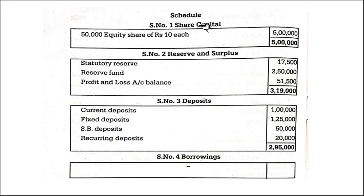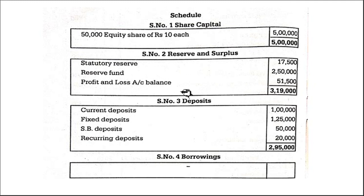So let us work out one by one. Share capital — as we identified at the beginning of the session, each item we identified where it goes. Same thing: equity shares — 50,000 equity shares. 5 lakh, Schedule 1. Schedule 2, reserves and surplus: statutory reserve, reserve fund — it is given in the trial balance. And profit and loss account balance — this is the profit for the current year, so leave it blank and fill after preparing the profit and loss account.